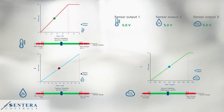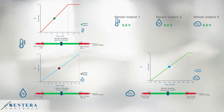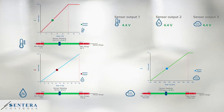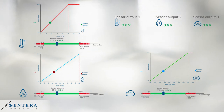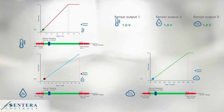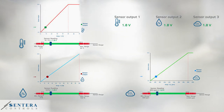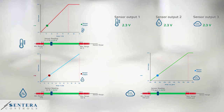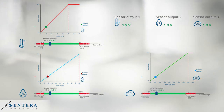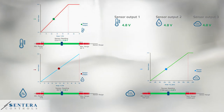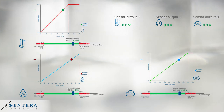The sensor generates an output value depending on the measured parameters. So if the measured temperature, relative humidity, and carbon dioxide in the room are in the low range, the output value will also be low. Likewise, if the values are in the high range, the output value will be high.